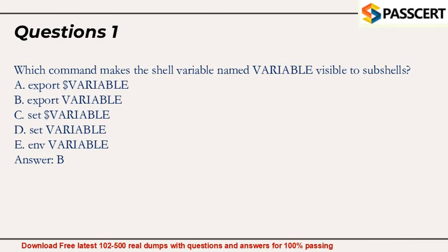Question 1. Which command makes the shell variable named 'variable' visible to subshells? A. export $variable. B. export variable. C. set $variable. D. set variable. E. env variable. Answer: B.